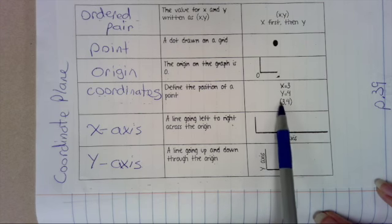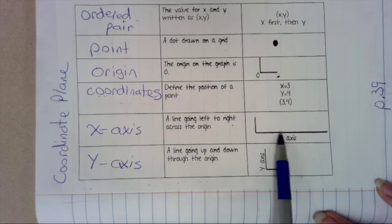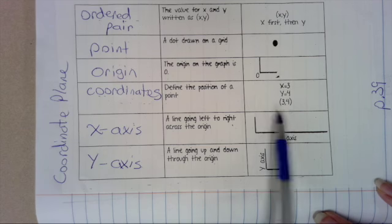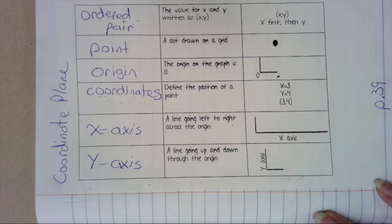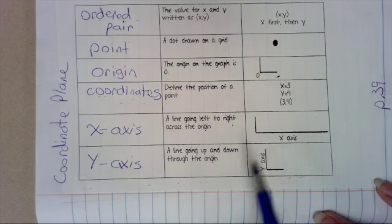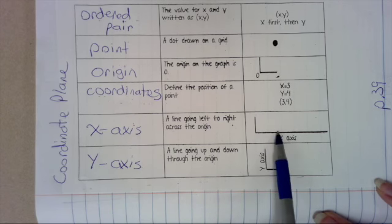Because when you're graphing points, you have to do the X axis first before you do the Y axis. So if we were graphing 3, 4, we would go over 3, up 4. If we did it the other way, if we went over 4 and up 3, that's the wrong coordinates. So it's very important that you know you go left and right before you go up and down.